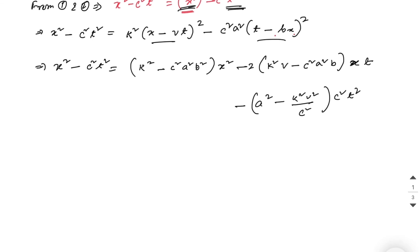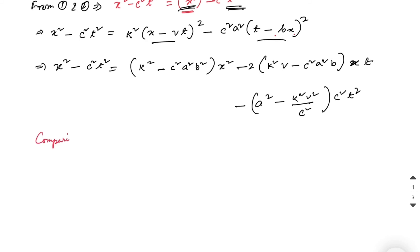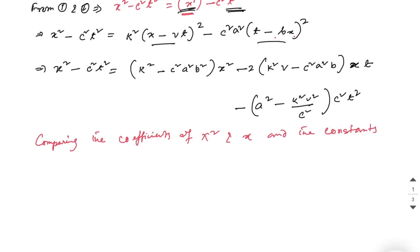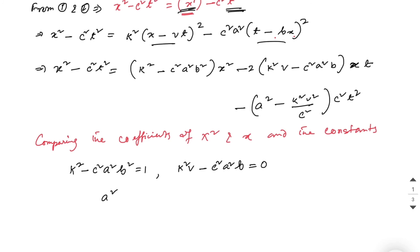Comparing the coefficients of x², xt, and c²t² on both sides, we get three equations: k² − c²a²b² = 1, k²v − c²a²b = 0, and a² − k²v²/c² = 1.